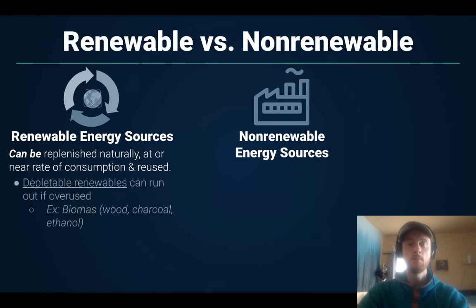We have two categories. One of them is depletable renewables — these can run out if they're overused. For instance, if we use biomass like wood and cut down forests faster than they regrow, we're not using that sustainably and it does not exist as a renewable resource — it will run out eventually. Other examples are charcoal and ethanol, which is a form of alcohol generated from corn. If we're not replanting that corn and caring for the soil in a way that continues to support ethanol production, it's not being used sustainably and is not a renewable resource.